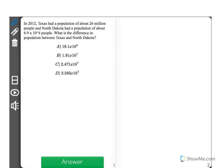In 2012, Texas had a population of about 26 million people, and North Dakota had a population of about 6.9 times 10 to the fourth people. What is the difference in population between Texas and North Dakota?